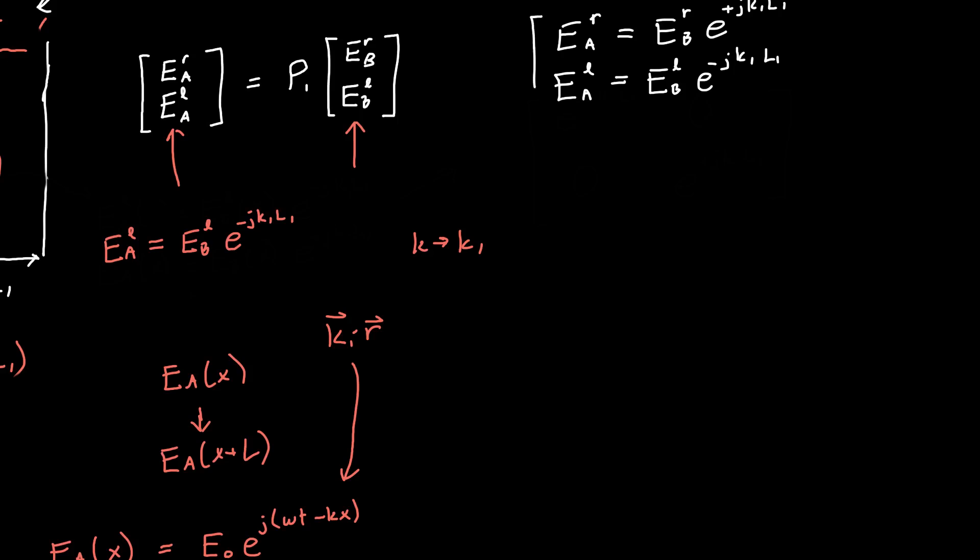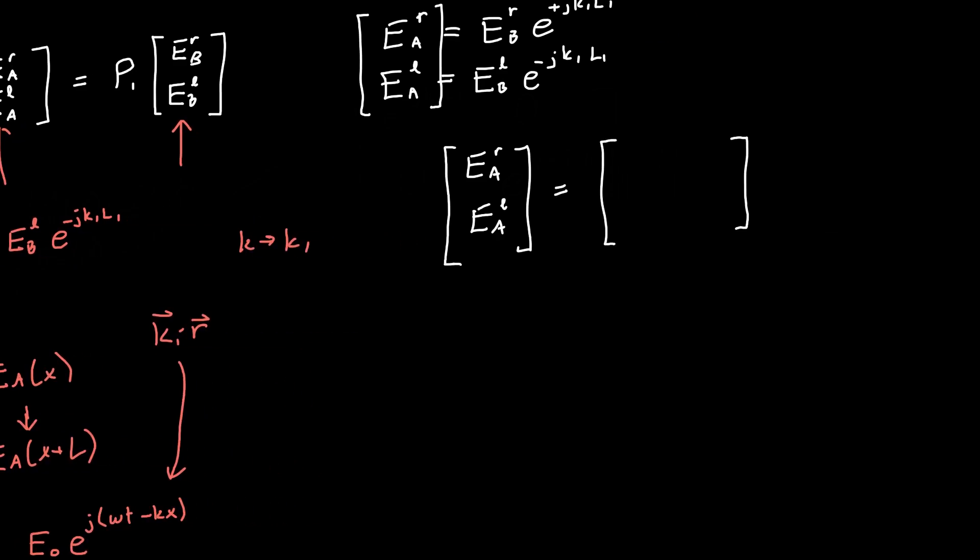I'm going to rewrite both of them. EA rightward traveling wave is equal to EB rightward traveling wave times E to the plus JK1L1, and EA leftward traveling wave times E to the minus JKL1. So how do we convert this into a matrix? It's a really simple matrix. There's only two coefficients that we have to worry about. If we're interested in forming a matrix between EA right and EA left equal to some matrix times EB traveling to the right and EB traveling to the left, the matrix coefficients P11 is just equal to E to the plus JK1L1, and P22 is equal to E to the minus JK1L1, and the other two coefficients are just equal to zero.